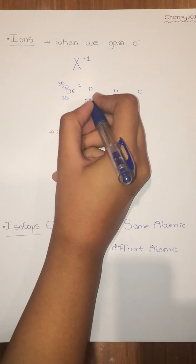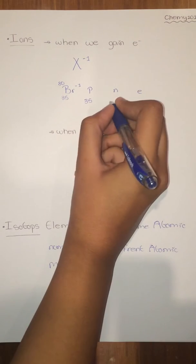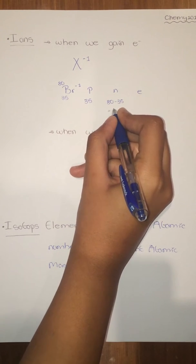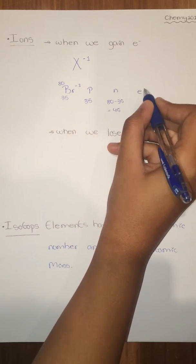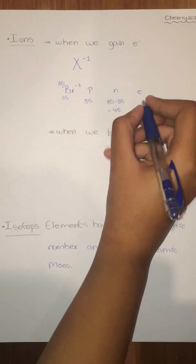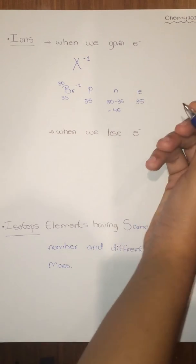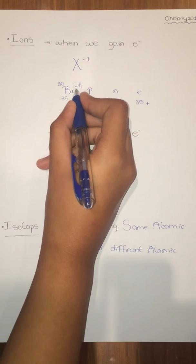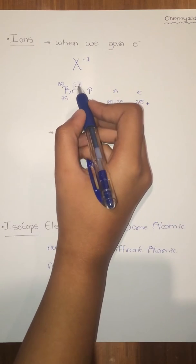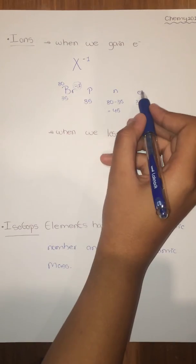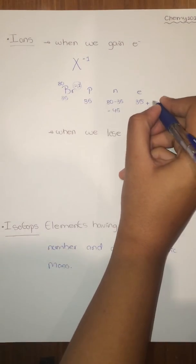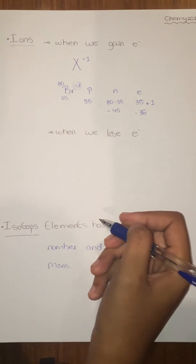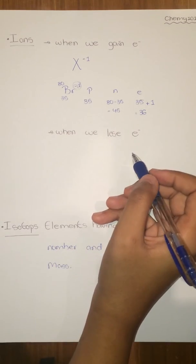The number of protons equals the atomic number, so protons equals 35. Neutrons will equal 80 minus 35, which equals 45. The electrons will equal 35 (number of protons) plus the electrons it gains — here it gained one electron, so plus one — and that will equal 36.